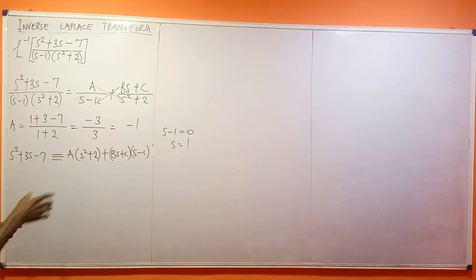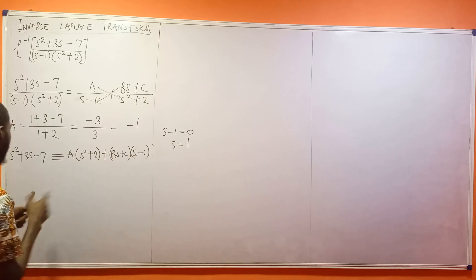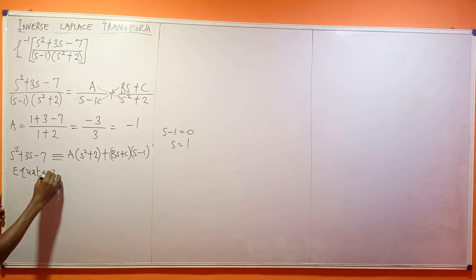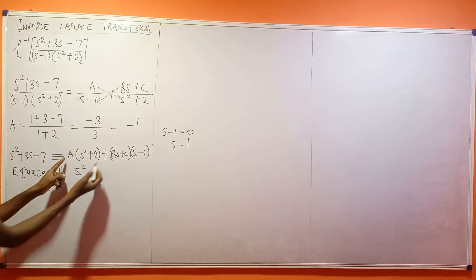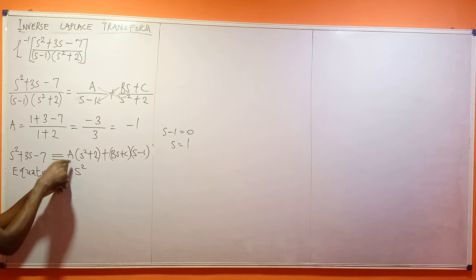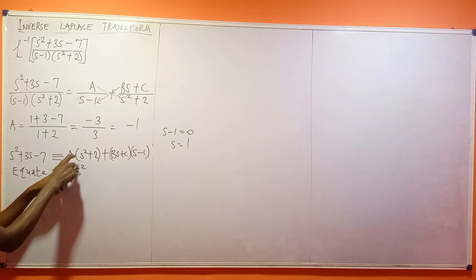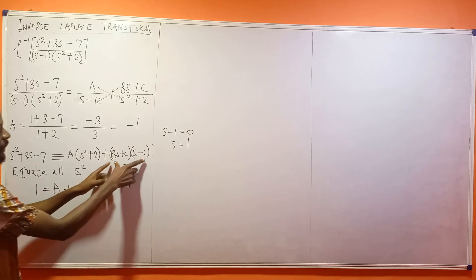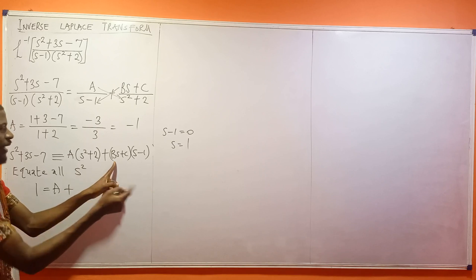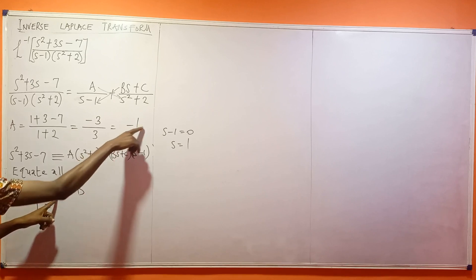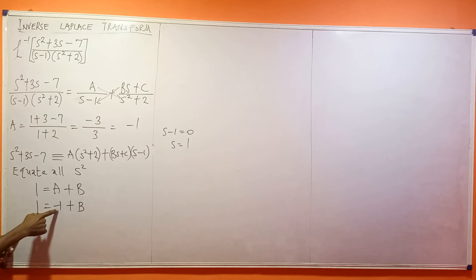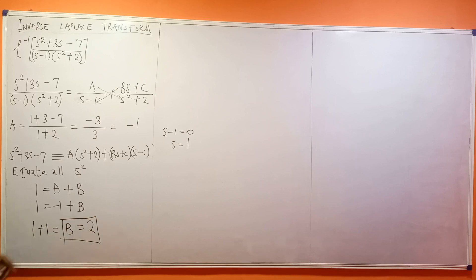Rather than expanding everything fully, I'll equate coefficients of s². On the left side, the coefficient of s² is 1. On the right side, expanding A(s² + 2) gives As², so the coefficient is A. Expanding (Bs + C)(s - 1) gives Bs², so the coefficient is B. Therefore: 1 = A + B, which is 1 = -1 + B, giving B = 2.